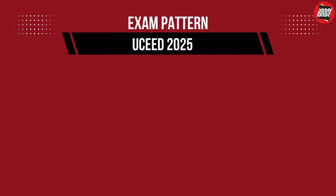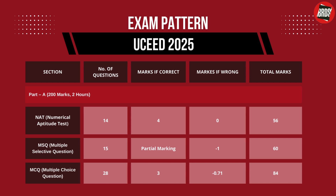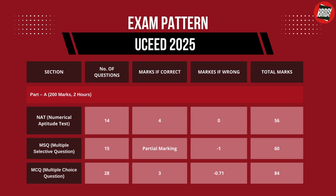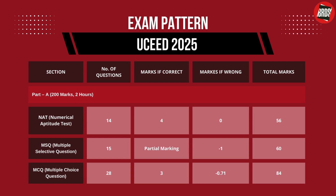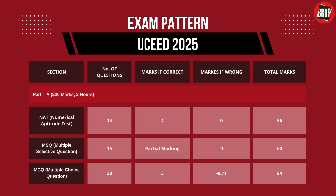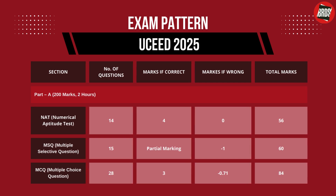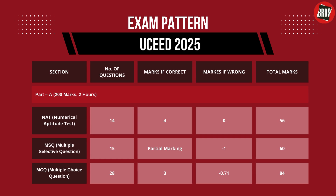Let's look at the exam pattern. Part A is of 200 marks and the duration is 2 hours. This part will be a computer-based test consisting of 3 sections: NAT, MSQ, and MCQ. NAT is Numerical Answer Type — it has 14 questions, 4 marks for a correct answer, no negative marking. For these questions, the answer is a number that needs to be entered using the virtual keyboard on the computer screen. No choices will be shown for this question type.